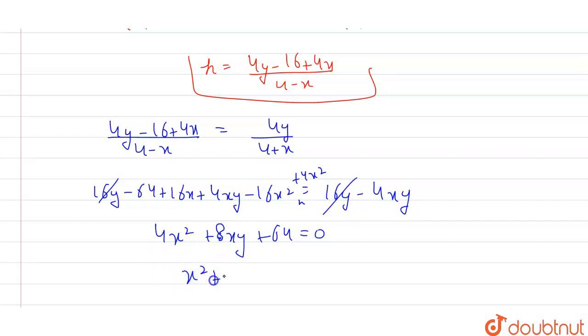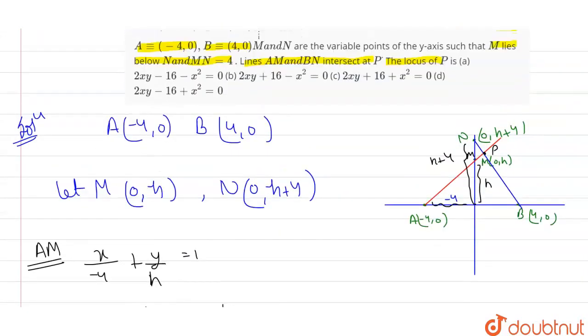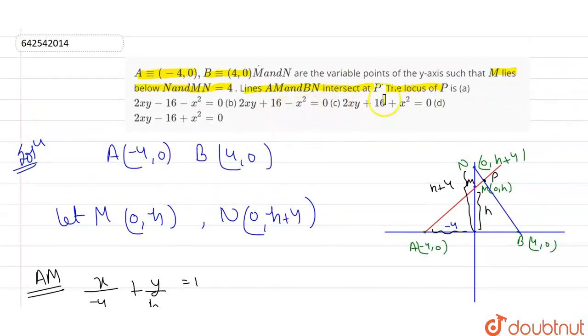And this is the equation of locus we are looking for. This is the value of locus at P: X² + 2XY + 16 = 0. If we go to the question, the equation we are looking for is 2XY + 16 + X² = 0. This is our answer.